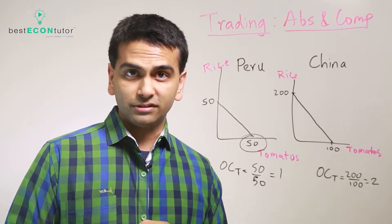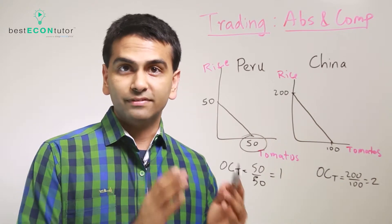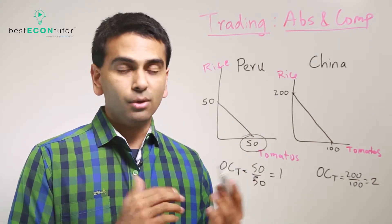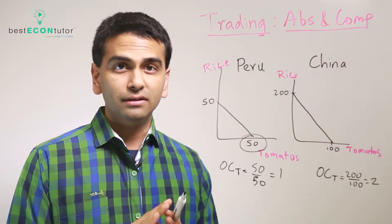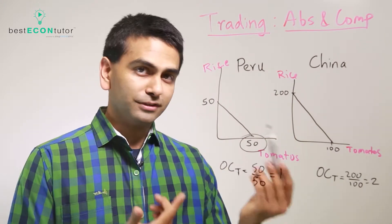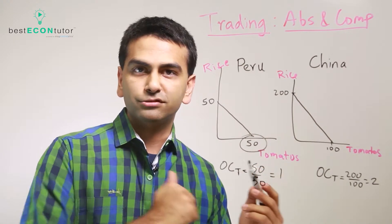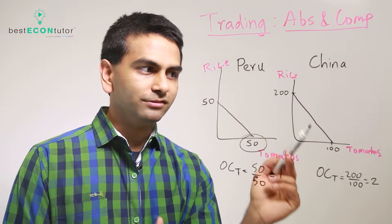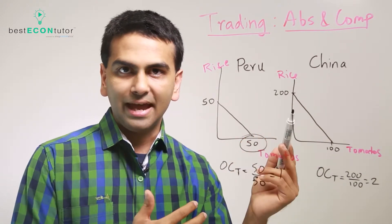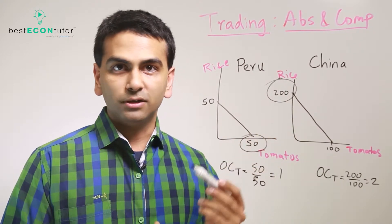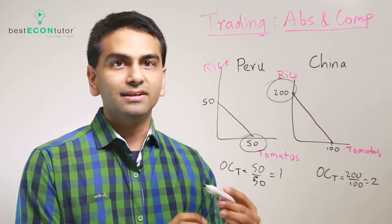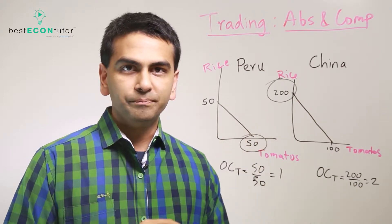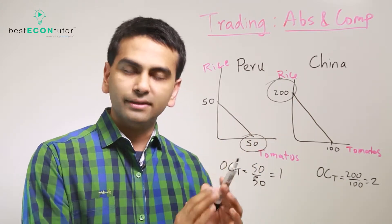The key thing about comparative advantage is that if one country has it for one good, the other country automatically has it for the other good — it's mathematically impossible for one party to have the comparative advantage for both goods. To verify: Peru's cost of rice is 50 over 50, still 1. China's cost of rice is 100 over 200, which is one-half. A half is less than 1, so China has the comparative advantage for rice. Since the other opportunity cost is always the reciprocal, one country will specialize in one good and the other in the other.